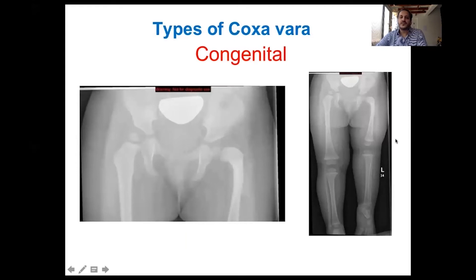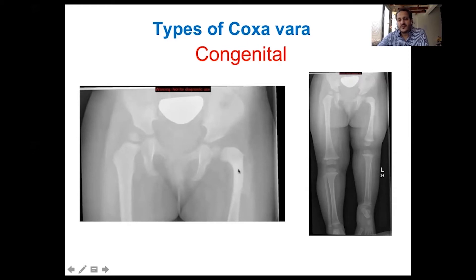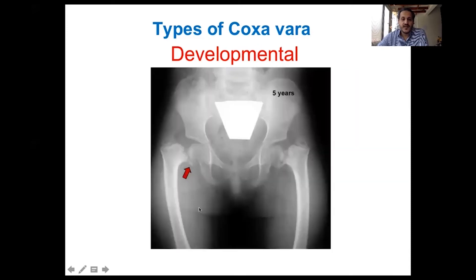What are the different types of coxa vara? The congenital type is usually associated with a congenitally short femur or femoral deficiency. You will notice sclerosis in the proximal femur, shortening of the femur, and external rotation of the limb. This is usually unilateral. It should not be mistaken for developmental coxa vara, which is a distinct type that is not present at birth but starts to appear at the age of four to five years.